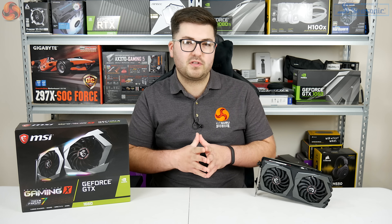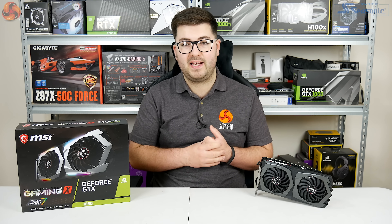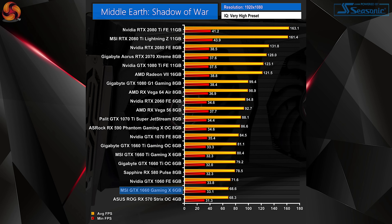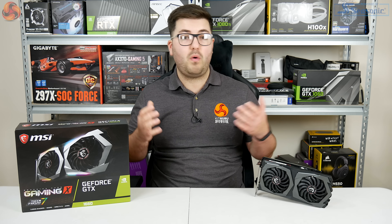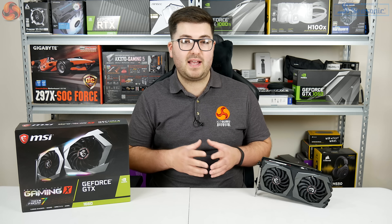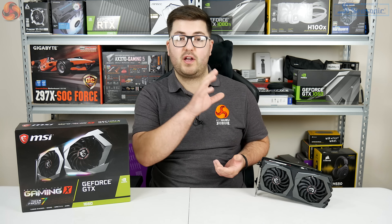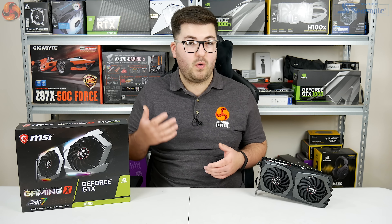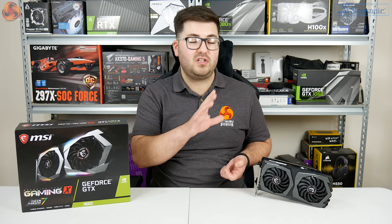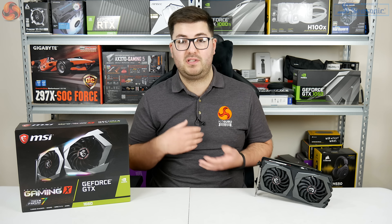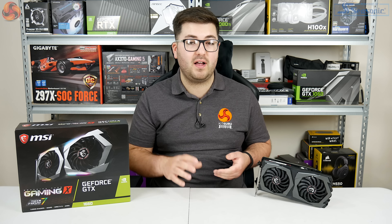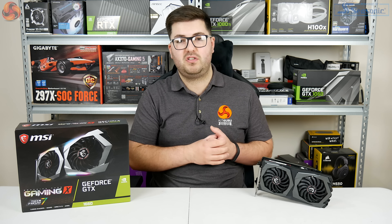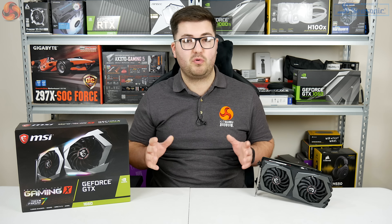I did notice one anomalous result in Middle Earth: Shadow of War that I want to touch on. At 1080p, for a reason I cannot logically explain, the GTX 1660 was actually performing slightly worse than the GTX 1060. I've tried reinstalling the driver, reseating the graphics card, and retesting the GTX 1060 with the latest drivers — nothing was changing. At this point it's probably either a driver issue with the press driver we were sent, or the game just needs an update, so we'll circle back on that in the future.